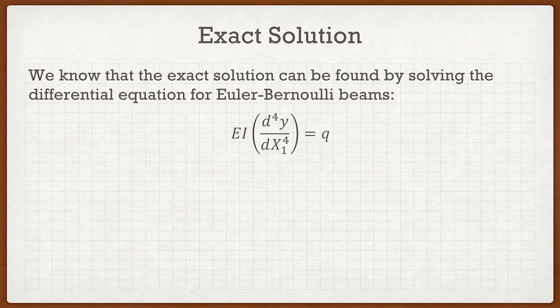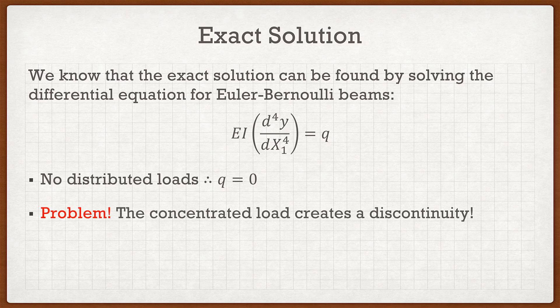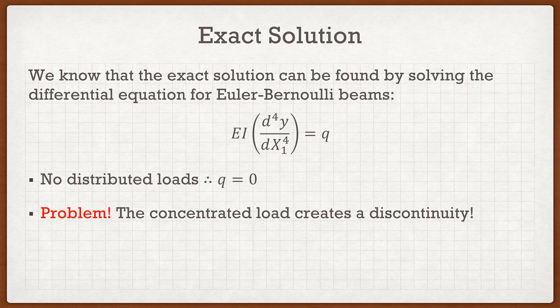The exact solution is found by solving the differential equation for Euler-Bernoulli beams: EI multiplied by the fourth derivative of deflection equals the distributed load Q. In our particular beam we have no distributed load, so EI times the fourth derivative of the displacement function equals zero. However, the concentrated load creates a discontinuity, so instead of solving for one continuous deflection function, we actually have to solve for two — one in each region of the beam.